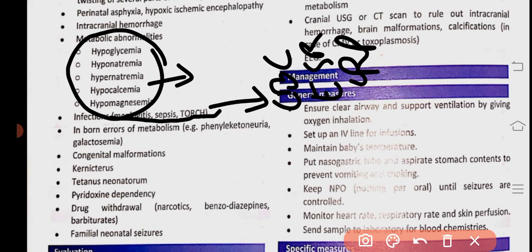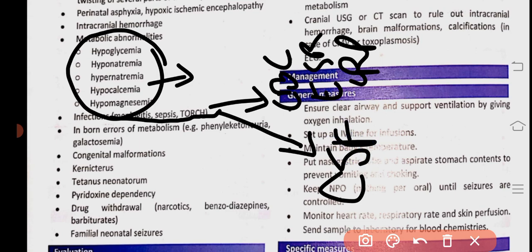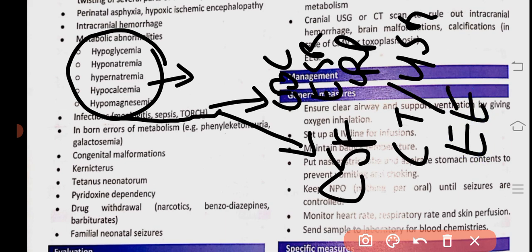Investigations include: CBC with ESR and C-reactive proteins — for example, for meningitis, sepsis, or TORCH infections. Serum electrolytes including calcium should be checked. For brain pathology, CSF culture alongside CBC, ESR, and CRP for meningitis. Brain ultrasound and CT scan should also be done, as well as EEG in seizure cases. Intracranial hemorrhage will appear on CT scan and brain ultrasound. Also check BUN, creatinine, LFTs, and RFTs.